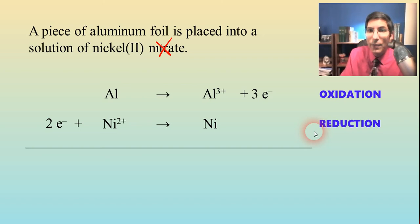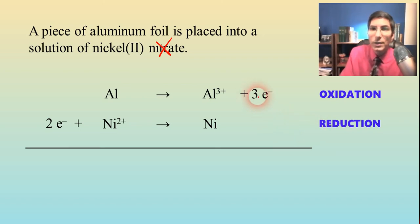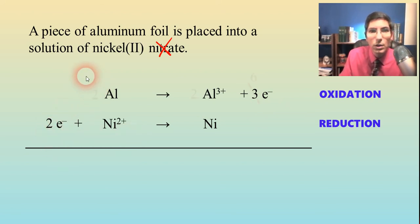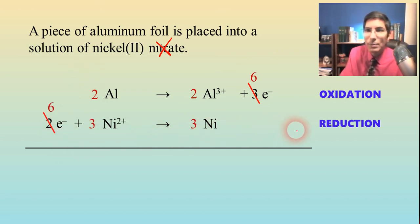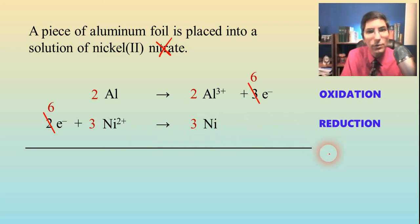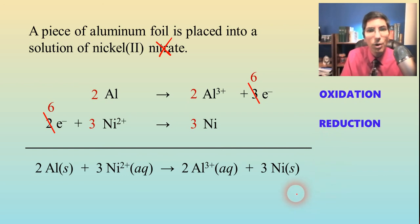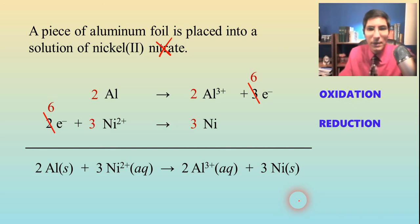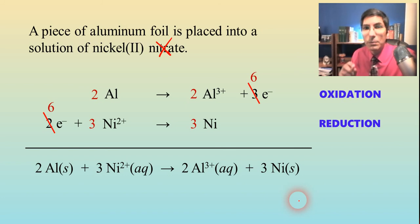When it's time to add these together, the electrons don't cancel out, so we multiply the top half reaction by two and the bottom one by three to get the same number of electrons in both. Here is our overall balanced equation. The half-reaction method helps us identify what's being oxidized, what's being reduced, and balance the equation overall.